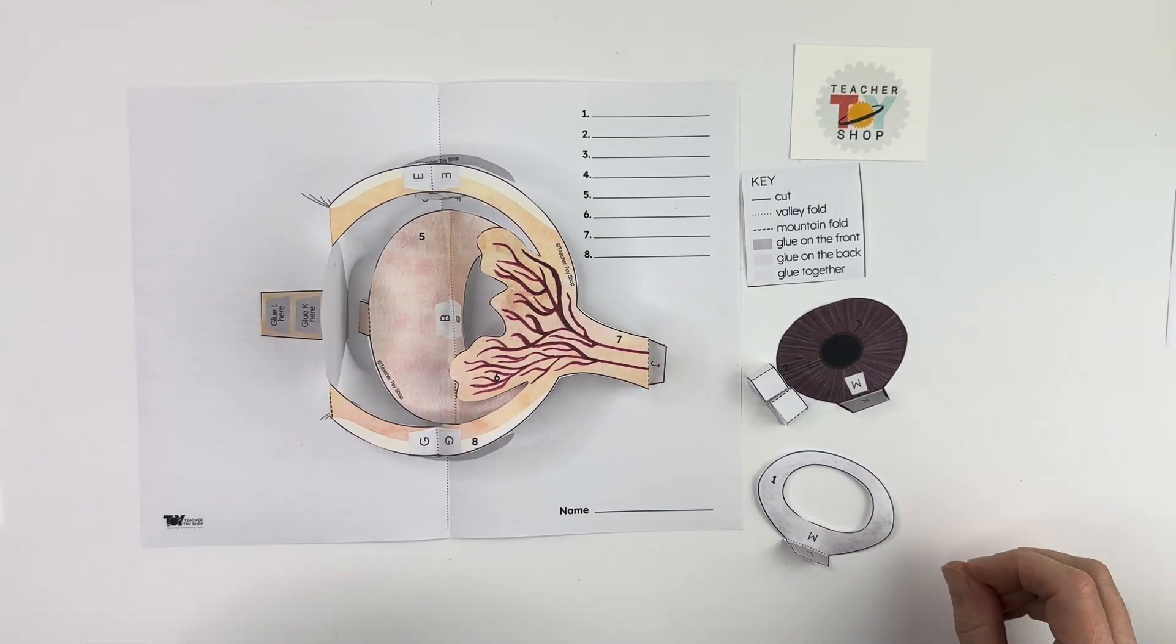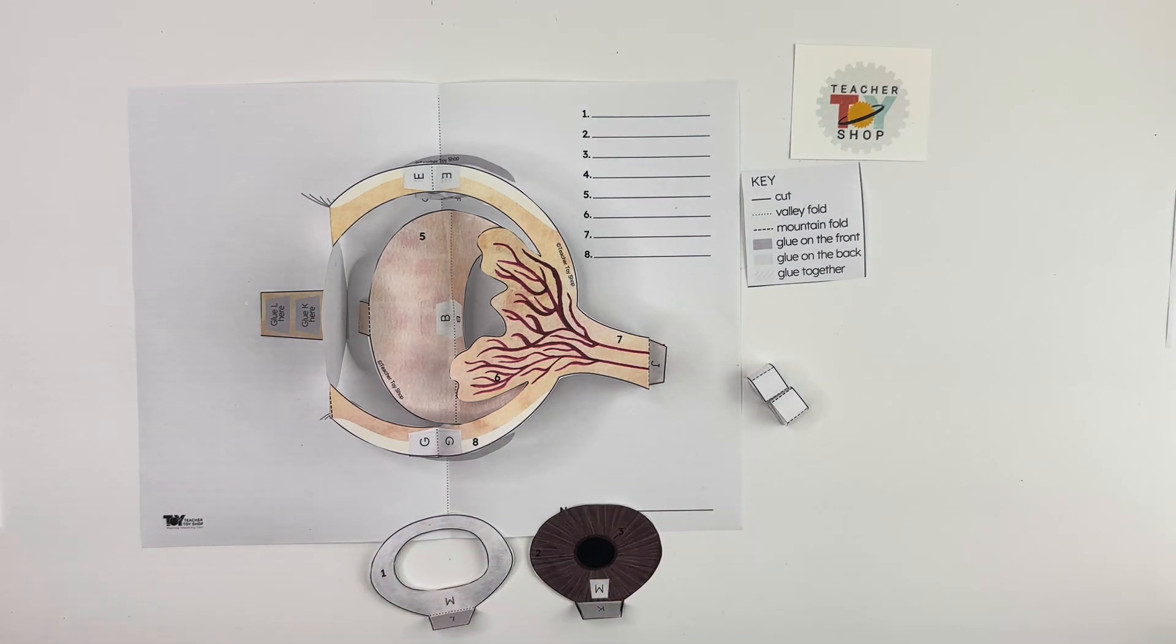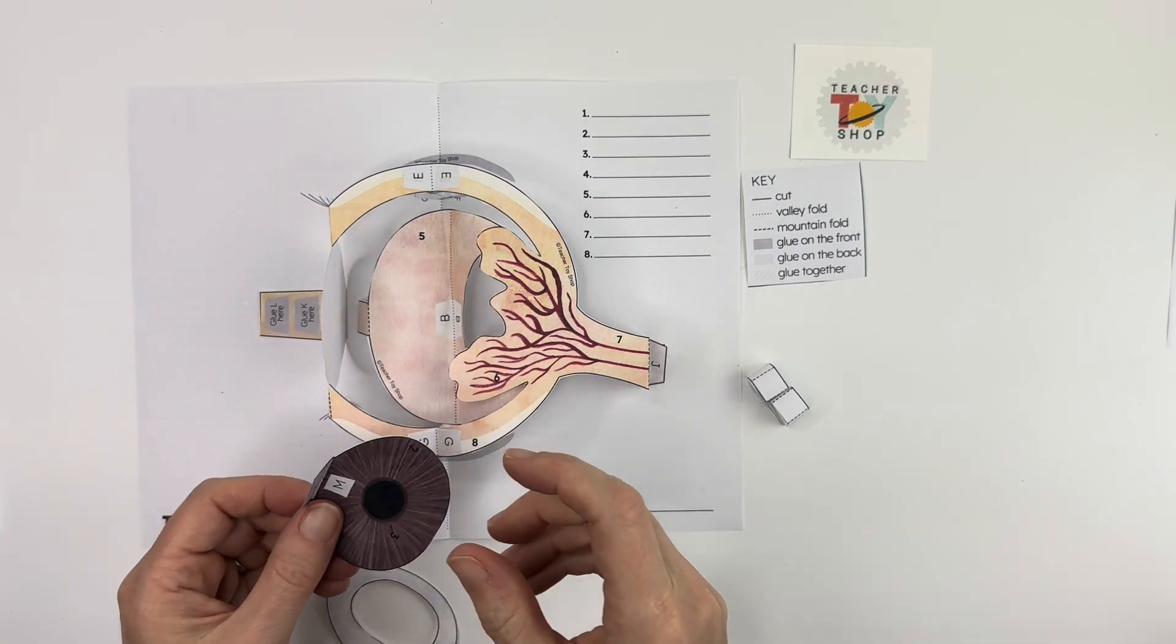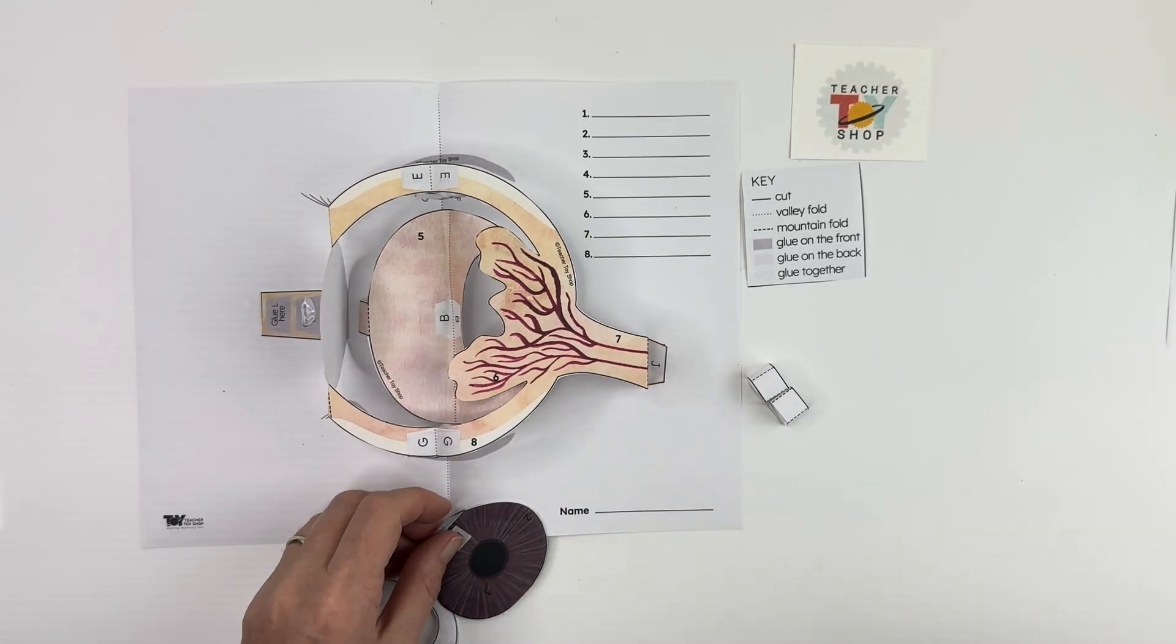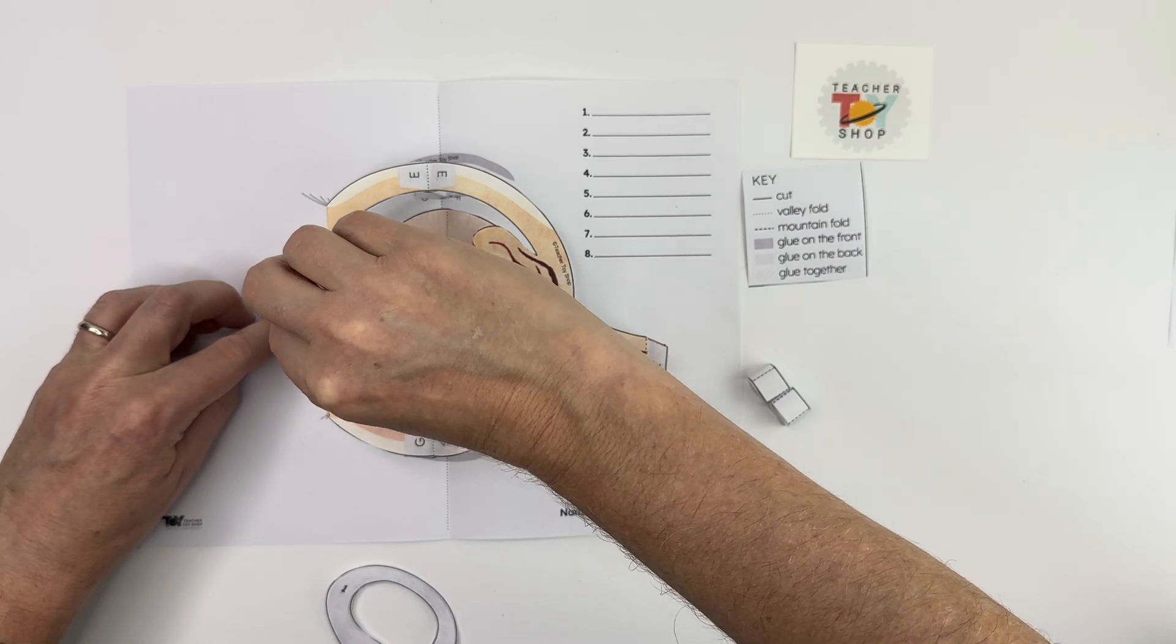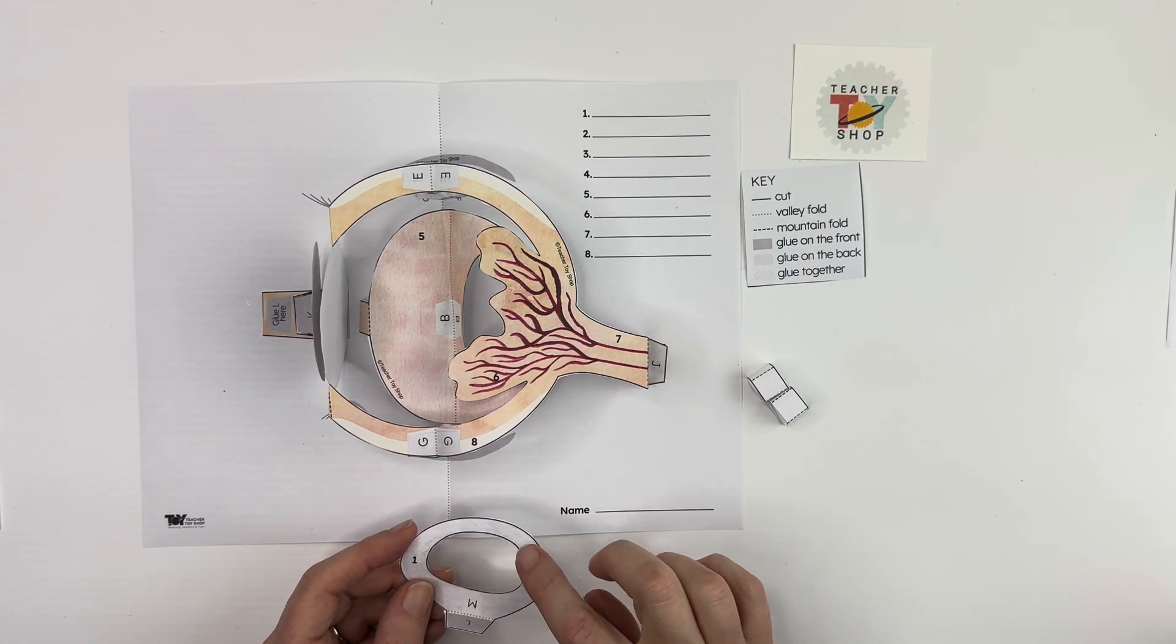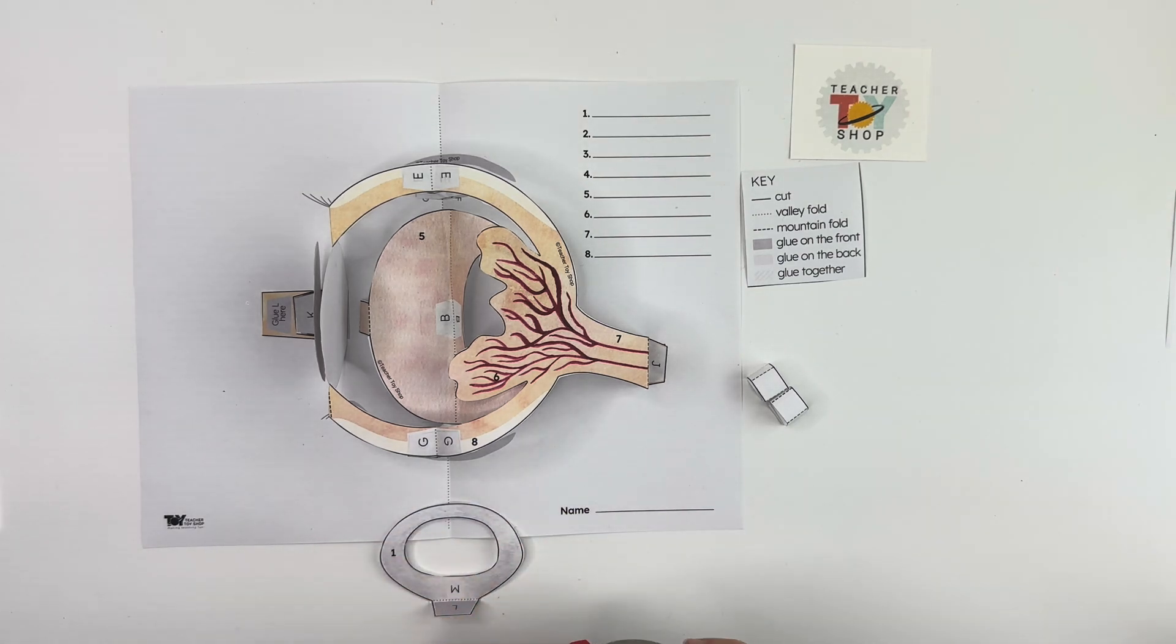Okay all right so then the next pieces we have are these here. So you can see this says glue, L is going to go there and K goes here. I'm actually going to start with K. Okay so that's going to go there and now with this one which goes in front, this is the cornea. And to represent that it's clear we're actually going to use some clear tape and put it in front of the hole. So the cornea is...